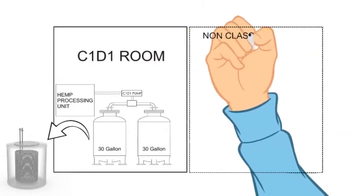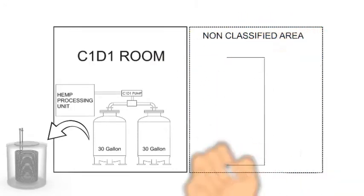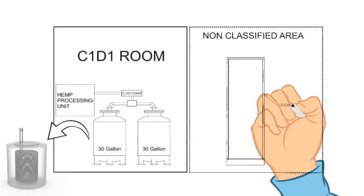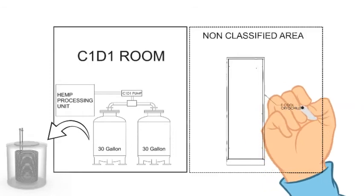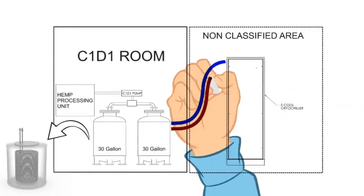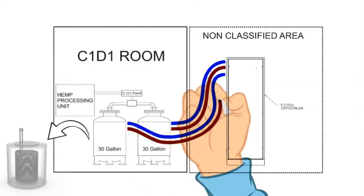In order to remain C1D1 compliant, the chiller, along with its electrical components, are installed outside of the classified space. Then, refrigeration lines are run directly to the jacketed tanks.